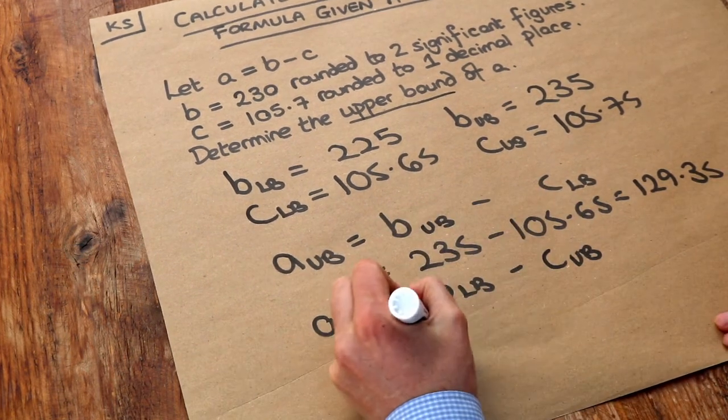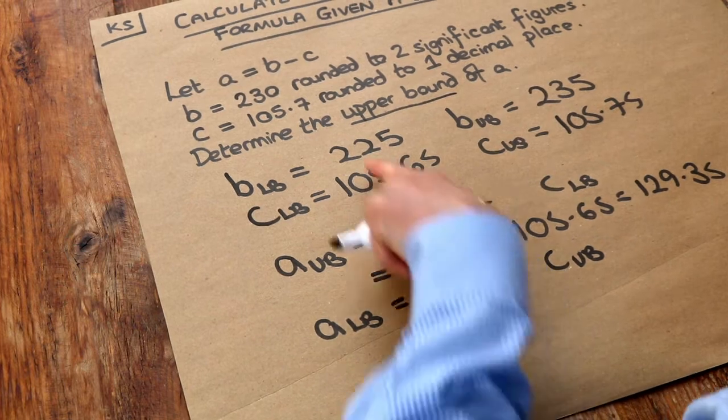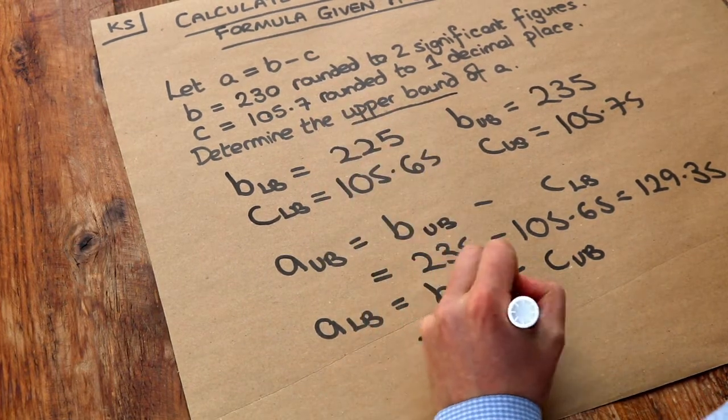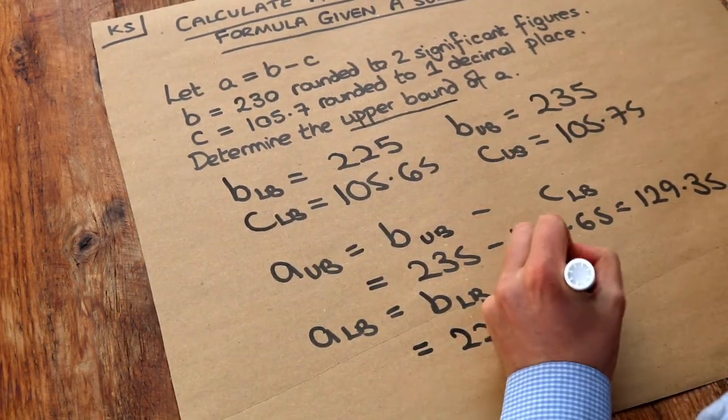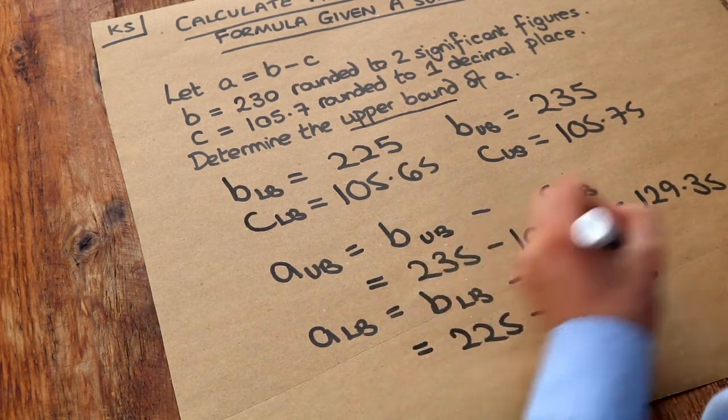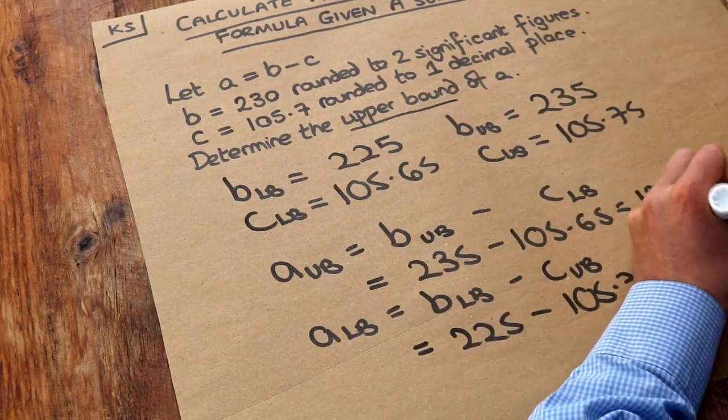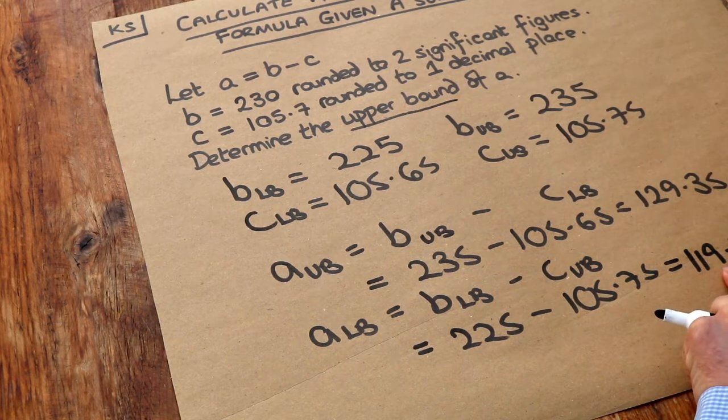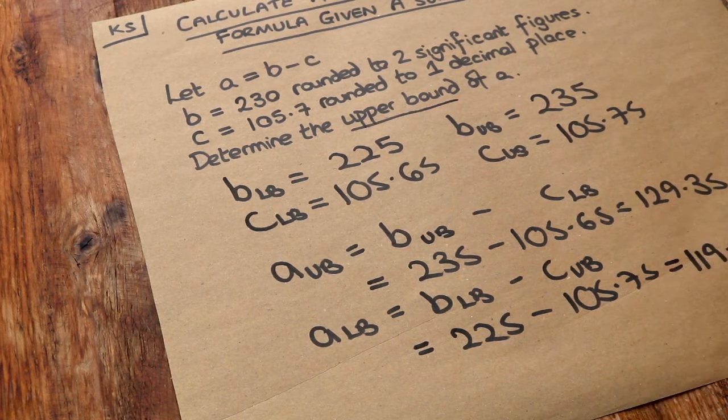So we're going to get as small a number as possible. So lower bound here is 225, upper bound of C is 105.75 and that gives me 119.25. So that's the smallest A could have possibly been and that's the biggest that A could have possibly been.